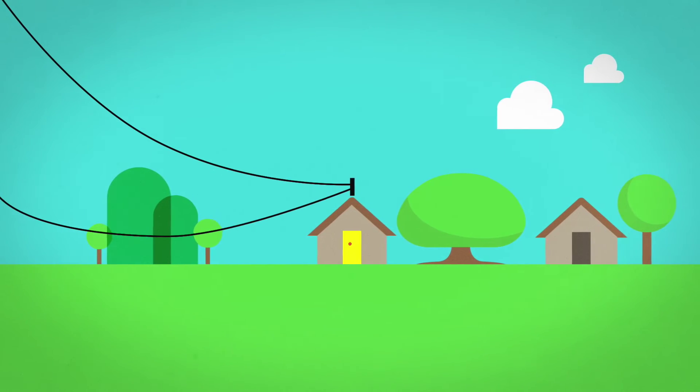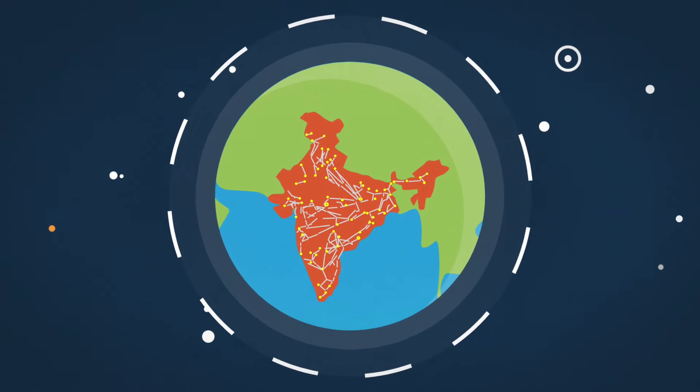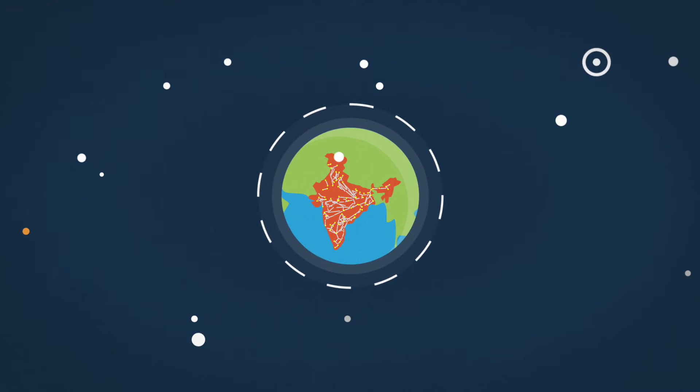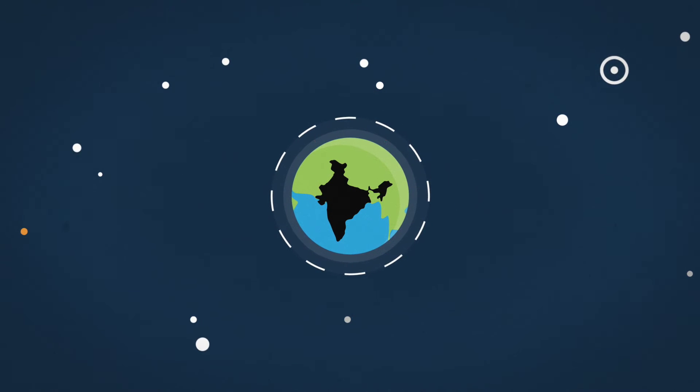But millions of Indians still have no connection to the grid. Even those who do suffer from regular blackouts. In 2012, 600 million of us were plunged into darkness because of outages on the main grid, the biggest power failure in human history. This is what it feels like for 400 million people who have limited access or no access at all.